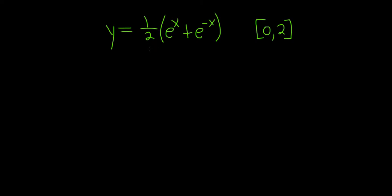In this problem we're going to find the arc length of the graph of this function from 0 to 2. The arc length formula uses lowercase s, given by the definite integral from a to b of the square root of 1 plus y-prime quantity squared, dx. This is the formula typically used for arc length.